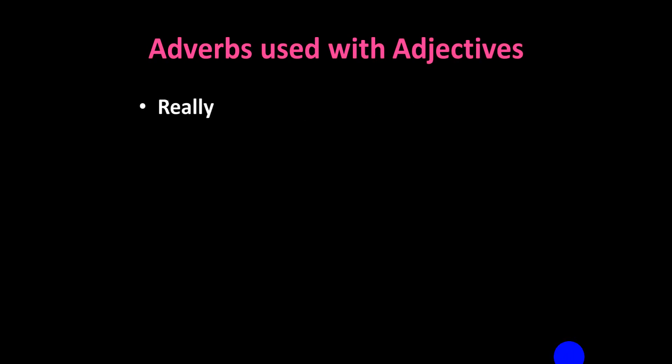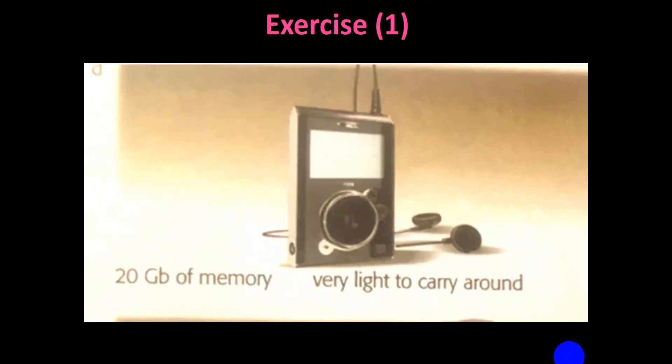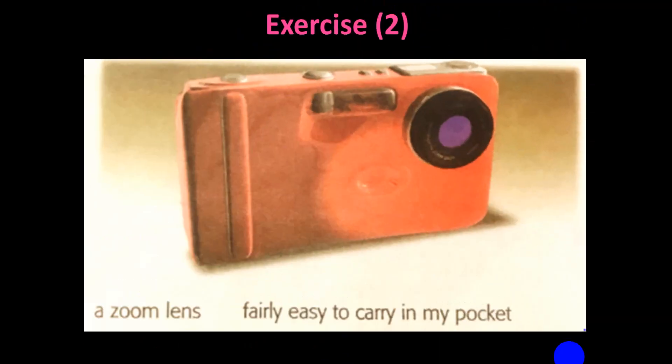We have: really, very, fairly, quite, pretty. These are the adverbs. Now we have some photos or images here. If you want to describe this item, you say: this is a speaker, a radio, a black small radio that has got 20 gigabytes of memory. It's very light to carry around. Second one: this is a small red camera—size and color. It has got a zoom lens and is fairly easy to carry in my pocket.